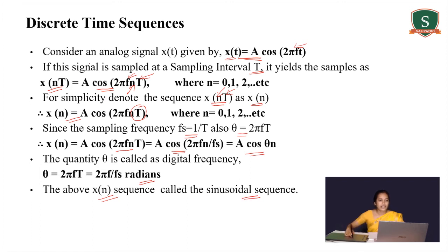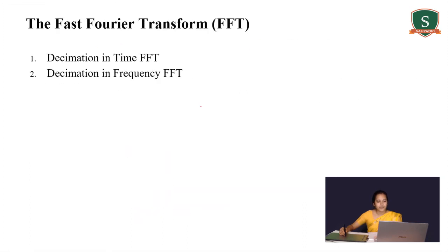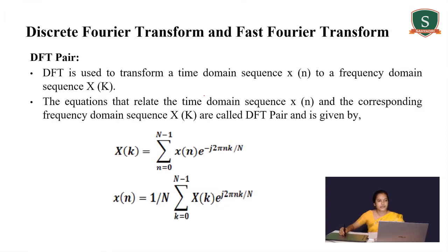To find the discrete time sequence we need to sample an analog signal x(t) at some sampling interval capital T to obtain a digital sequence x(n). Next we will see the way of transforming a time domain signal into frequency domain signals.